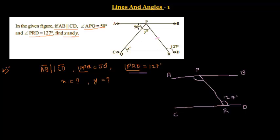If we see in the figure, the angle at P on line AB is the sum of 50 degrees and Y, so the angle is Y plus 50 degrees. AB and CD are parallel lines, and PR is a transversal. These two angles lie on either side of the transversal and are in between the two parallel lines, so they are called alternate interior angles.